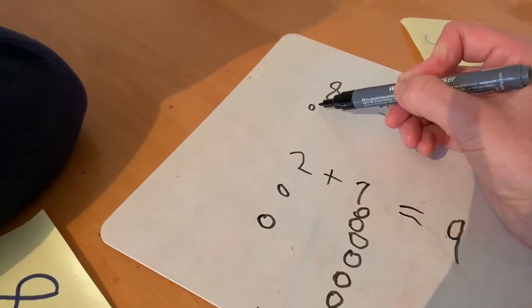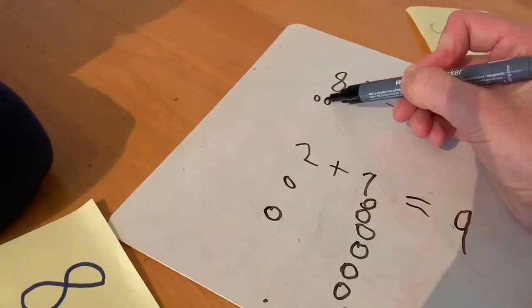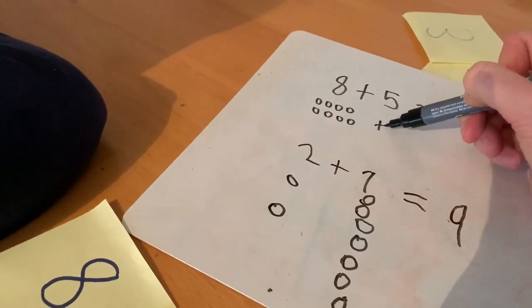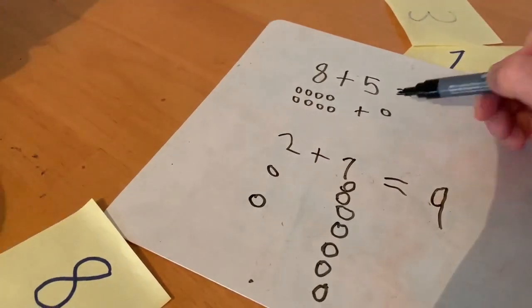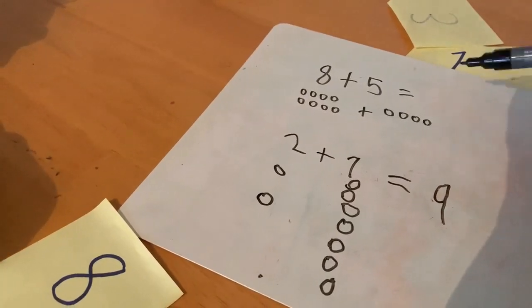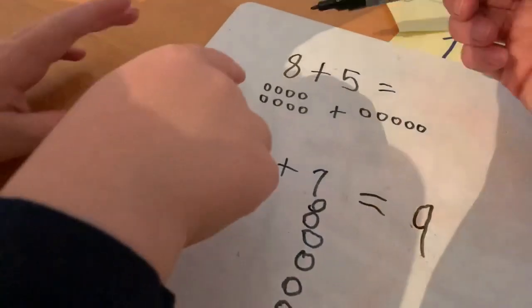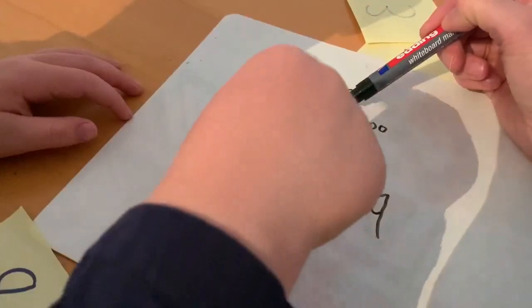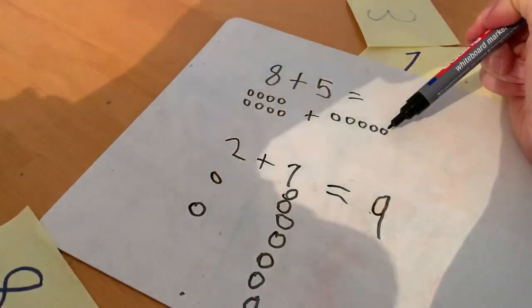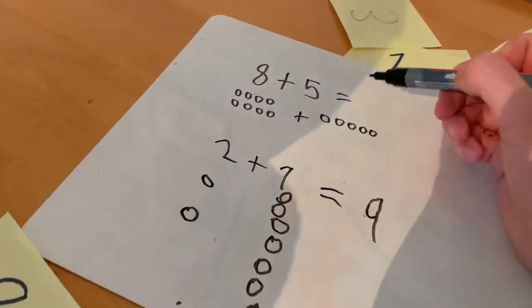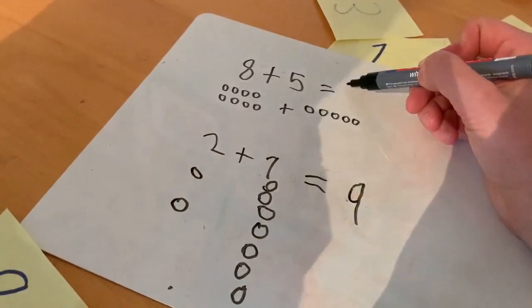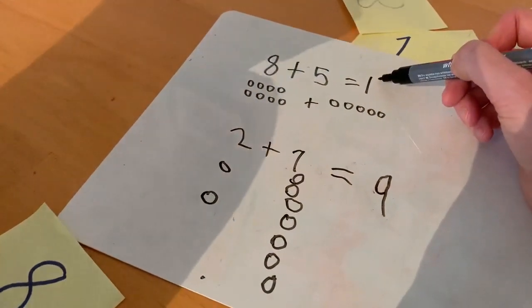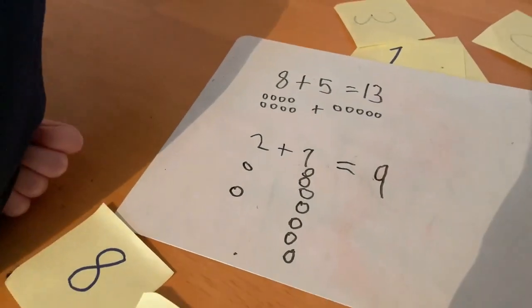I'm going to draw some things here to help me. How many circles do we need to draw? Eight: 1, 2, 3, 4, 5, 6, 7, 8. Add how many? Five: 1, 2, 3, 4, 5, 6, 7, 8, 9, 10, 11, 12, 13. Thirteen! How do I write 13? 1 and 3. Excellent, great number story.